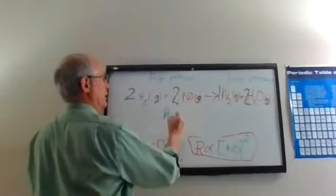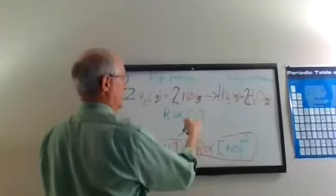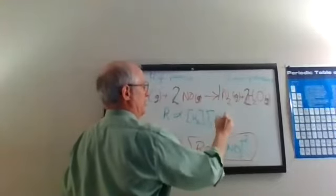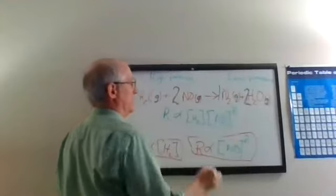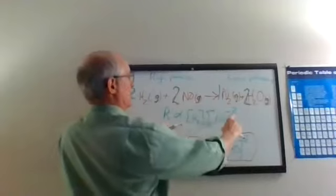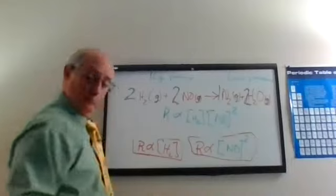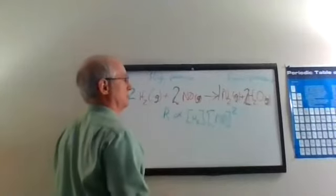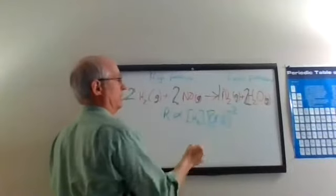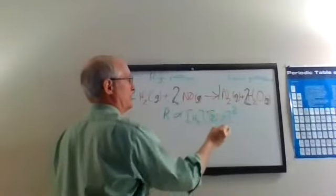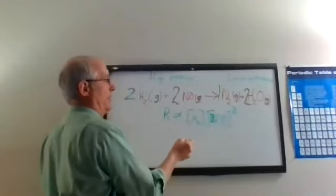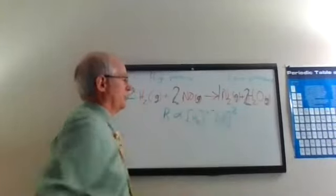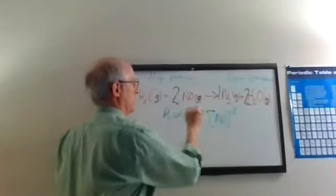So the reaction rate is related to the concentration of H2. When you double the concentration, you double the rate. And it's related also to the concentration of NO squared. Because as you double the concentration, you're going to quadruple the rate. And if you triple the concentration, you're going to nine times the rate, because whatever you put right here is going to be squared. And that's observed experimentally.